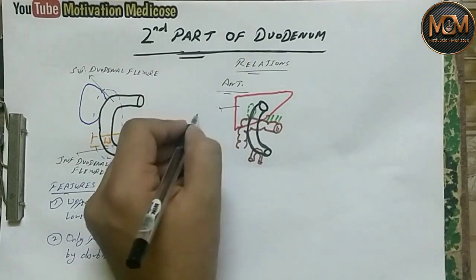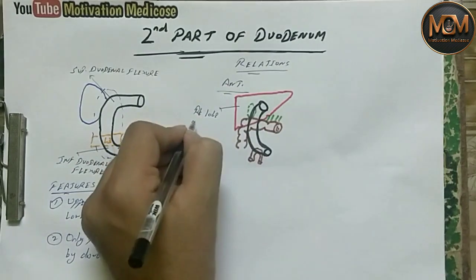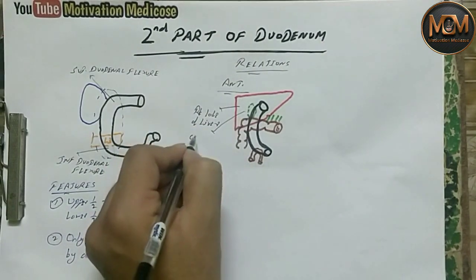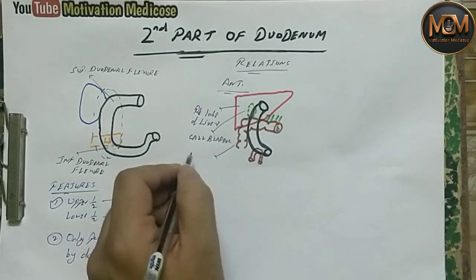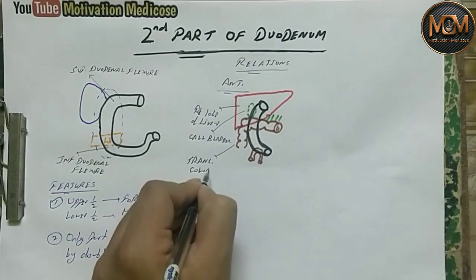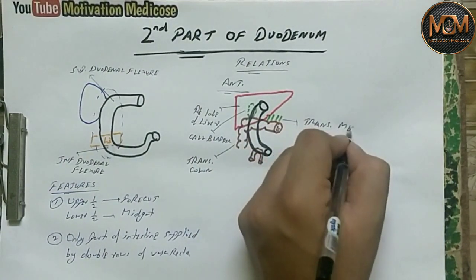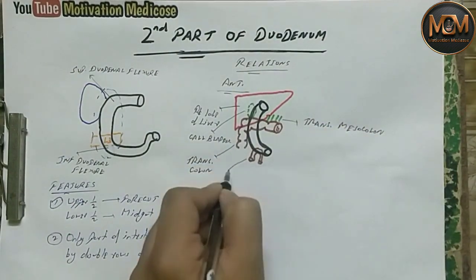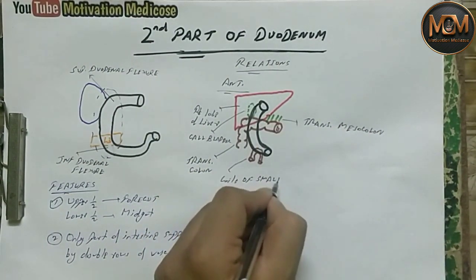To label the anterior structures: the right lobe of liver is present, then the gallbladder, then the transverse colon, the transverse mesocolon — which is the mesentery of the colon — and the coils of small intestine. These are all the structures present anteriorly.